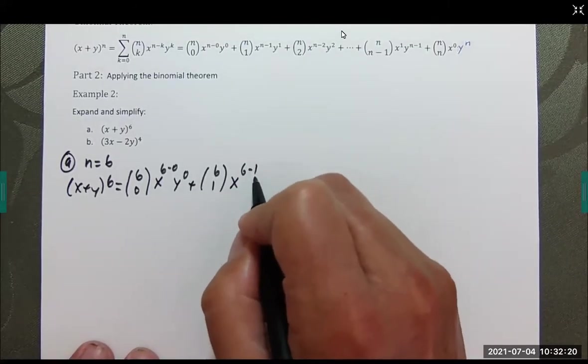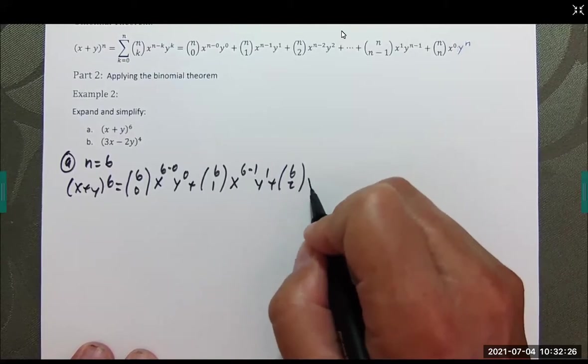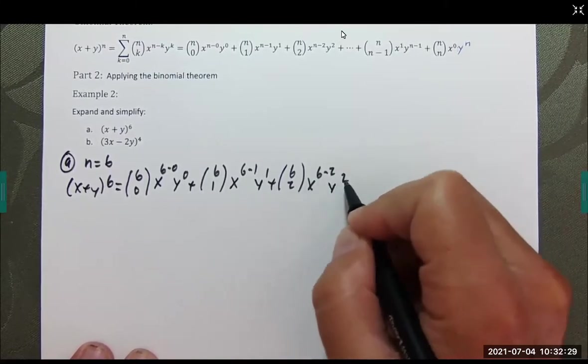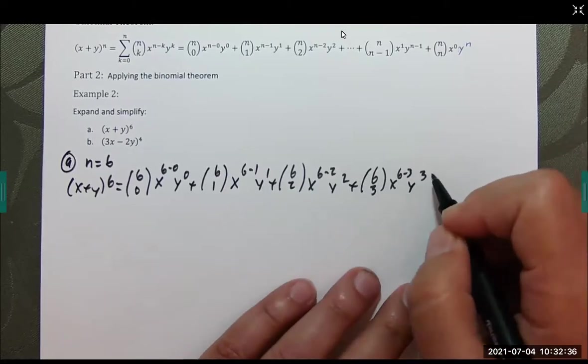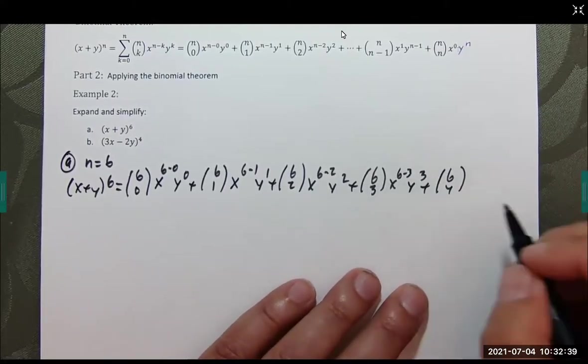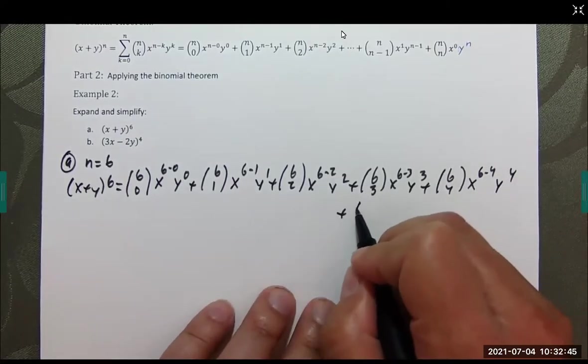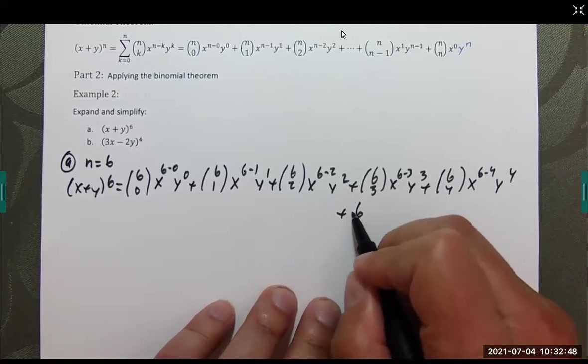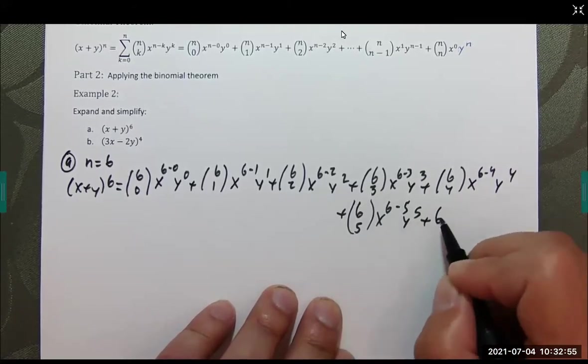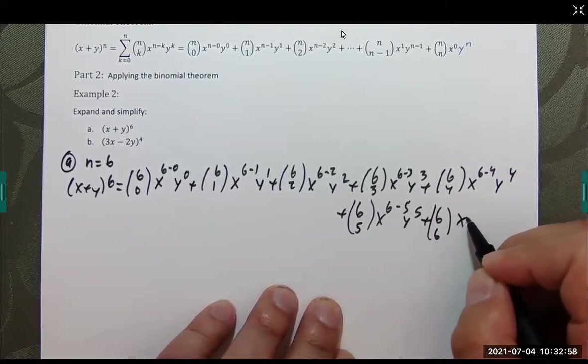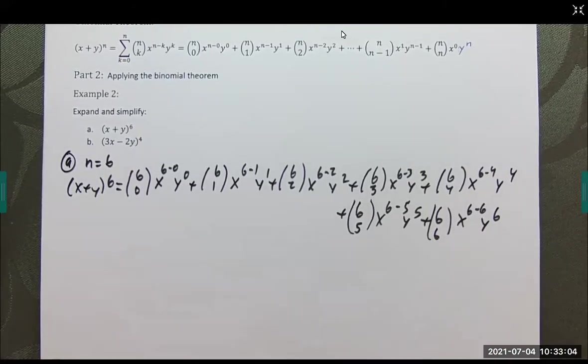6 choose 0, x to the (6 minus 0) power and y to the 0 power. Plus 6 choose 1, x to the (6 minus 1), y to the 1. Plus 6 choose 2, x to the (6 minus 2), y to the 2. Plus 6 choose 3, x to the (6 minus 3), y to the 3. Plus 6 choose 4, x to the (6 minus 4) power, y to the 4th power. Plus 6 choose 5, x to the (6 minus 5) power, y to the 5th. Plus 6 choose 6, x to the (6 minus 6) power, y to the 6th power. And let's crank this out.